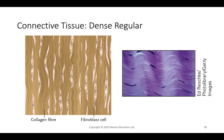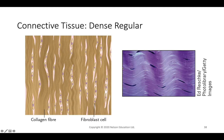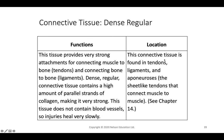Dense regular connective tissue has large parallel collagen fibers with fibroblasts in between — very structured and ordered. It is critical in tendons (connecting bone to muscle) and ligaments (connecting bone to bone), as well as aponeuroses, which are sheet-like tendons found over the head connecting muscle to muscle.